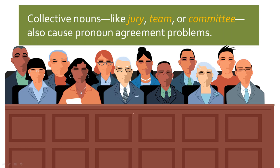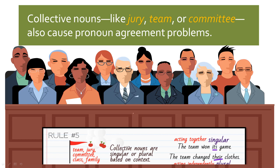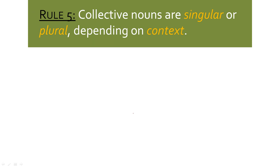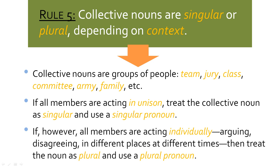Collective nouns like jury, team, or committee can also cause pronoun agreement problems. Collective nouns are singular or plural based on context — specifically, whether that collective group is acting together or acting independently. Collective nouns are groups of people: team, jury, class, committee, army, family. If all members are acting in unison, treat the collective noun as singular and use a singular pronoun. If all members are acting individually — arguing, disagreeing, at different places at different times — treat the noun as plural and use a plural pronoun.